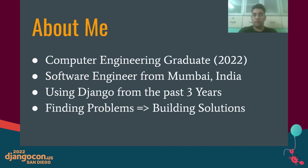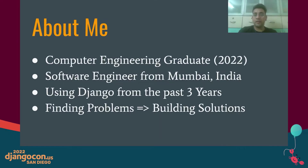A little bit of information about myself. My name is Jitain Sitpura and I completed my computer engineering just a couple of months back. I am a fresher who just recently started his professional software development journey. Currently, I am working as a full-time software development engineer from Mumbai, India, and I've been using the Django framework for the past three years. I find problems and then build solutions with my programming skills. In my free time, I love to read books and go to beaches.